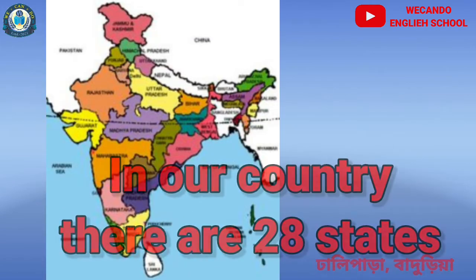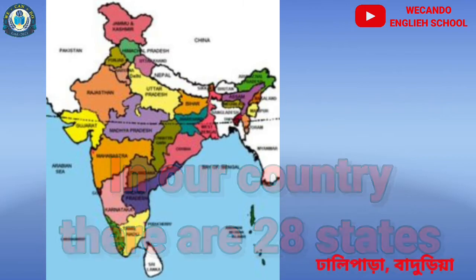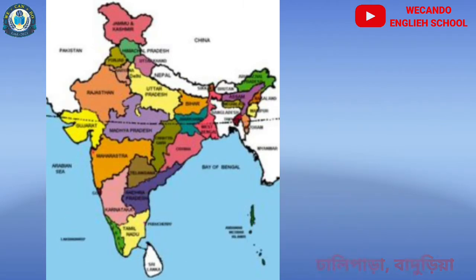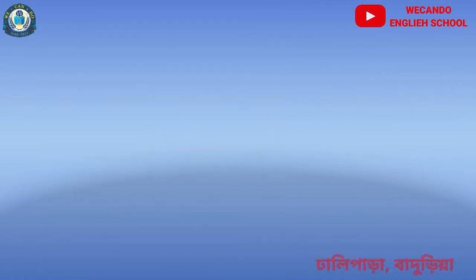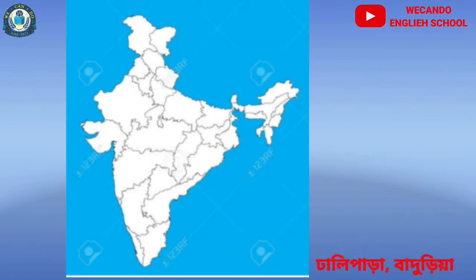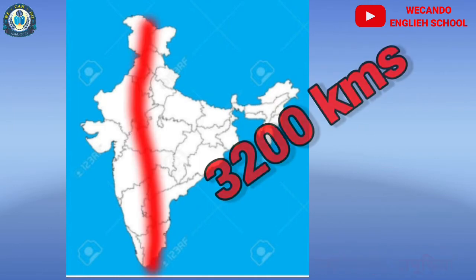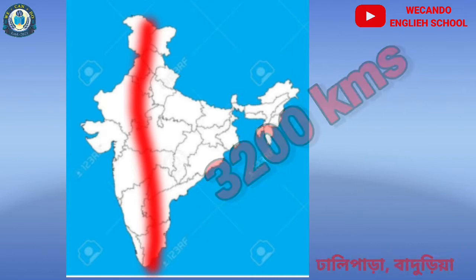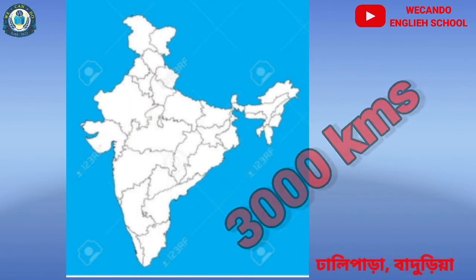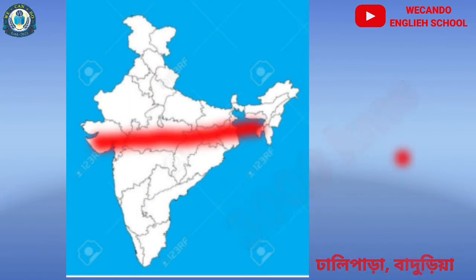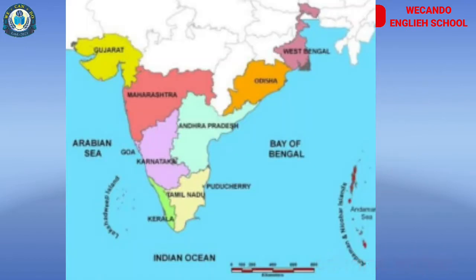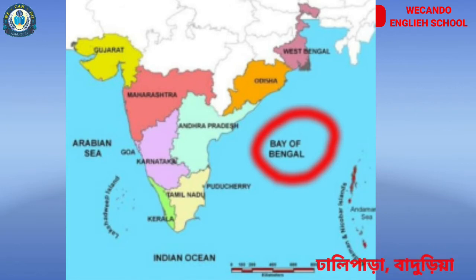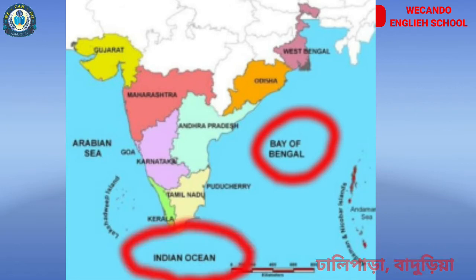In our country there are 28 states. If we measure the length of our country from north to south, it stretches 3200 kilometers, and from east to west it is 3000 kilometers. On its three sides there are three oceans: Bay of Bengal, Indian Ocean, and Arabian Sea.